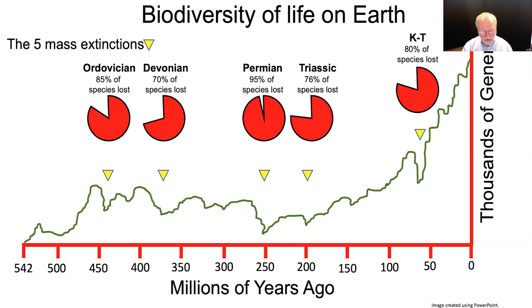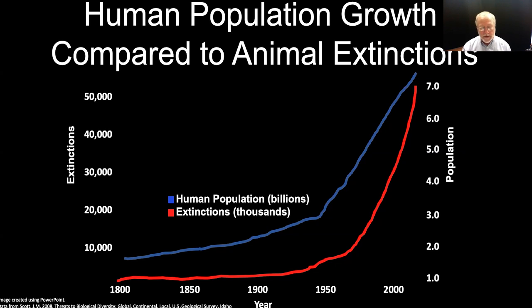Although mass extinction events cause a massive loss in biodiversity, this graph also shows something amazing — that is, that life rebounds. After each extinction event, there is a return of biodiversity on our planet. We are currently hosting the highest level of biodiversity to ever exist on Earth, somewhere between 10 to 100 million species. But many of the world's scientists are convinced that we are on the verge of a sixth mass extinction event. And this time it isn't an asteroid or volcanoes that are the cause — this time it is humans that are responsible.